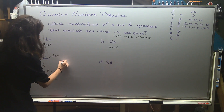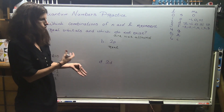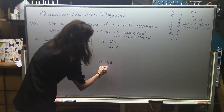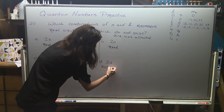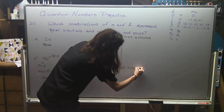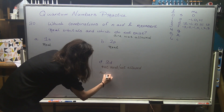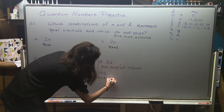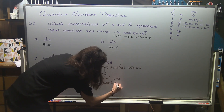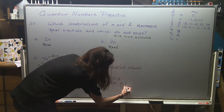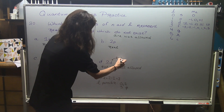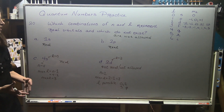2d is not a real combination. We don't start using d orbitals until the third row of the periodic table, so that's one way of saying it's not allowed. Using the formula: n equals 2, so max l is 2 minus 1 equals 1. The l values that are possible are 0 and 1, or s and p. D has an l value of 2, so it's a non-allowed combination of quantum numbers.